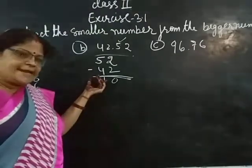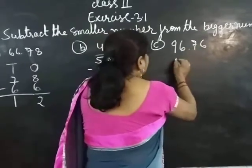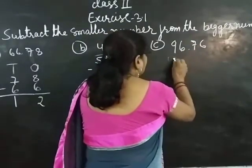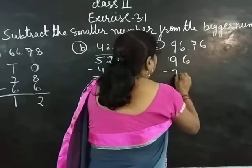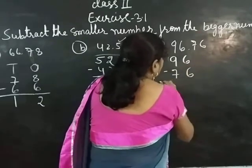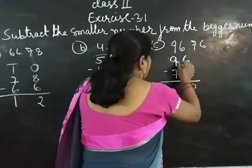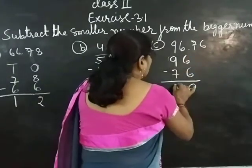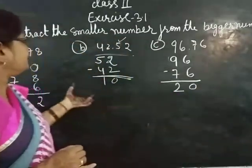Understand? Next one - this is 96. 96 minus 76. 6 minus 6 equals 0, and 9 minus 7 equals 2. So the answer is 20.